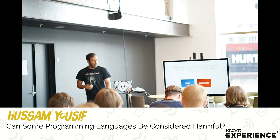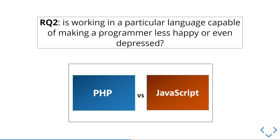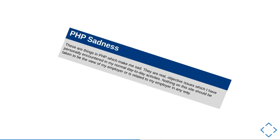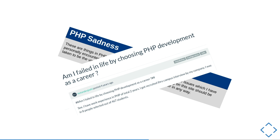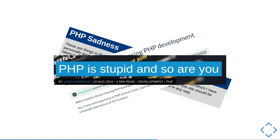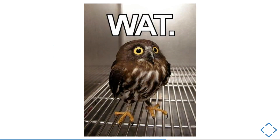Question two: is working in a particular language capable of making a programmer less happy or even more depressed? I put in PHP and JavaScript as examples. The paper actually uses PHP as an example of a language considered bad by the community. You have blogs called 'PHP sadness,' people talking about PHP making them sad, people asking if they failed in their career by choosing PHP, and one person with a clickbaity blog saying PHP is stupid and so are you for choosing it. Funny enough, that person is doing Node.js now.